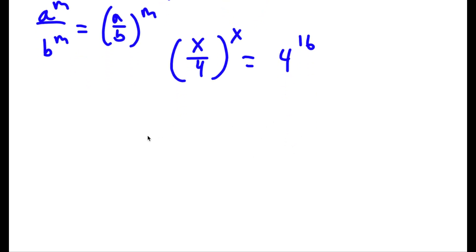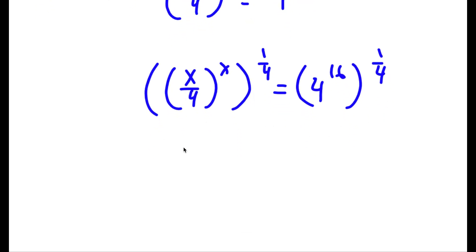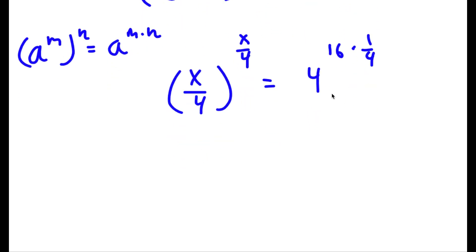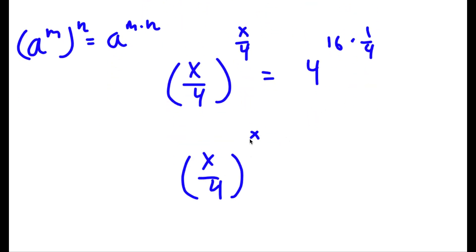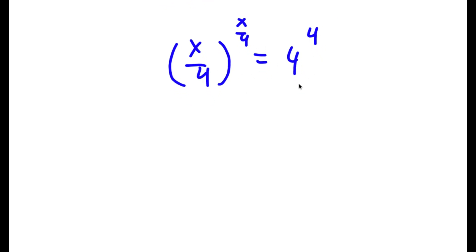Now I'm going to take the power of 1 over 4 on both sides. So now I have x over 4 to the power of x to the power of 1 over 4, is equal to 4 to the power of 16 to the power of 1 over 4. Using the rule a to the power of m to the power of n equals a to the power of m times n, this gives x over 4 to the power of x times 1 over 4, which is simply x over 4, and this is equal to 4 to the power of 16 times 1 over 4. Now 16 times 1 over 4 is equal to simply 4. So now I have x over 4 to the power of x over 4 is equal to 4 to the power of 4.